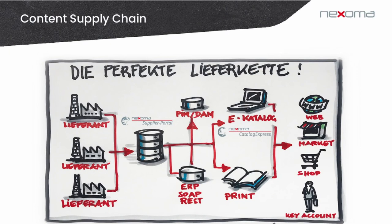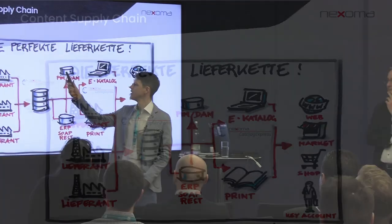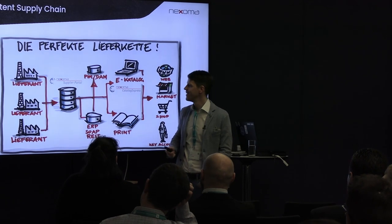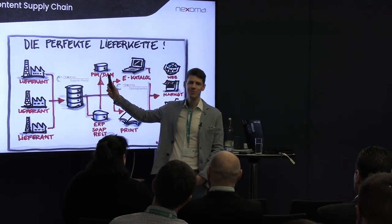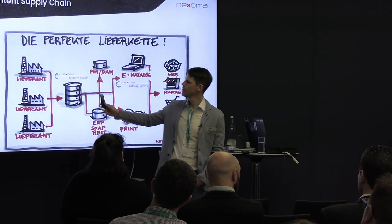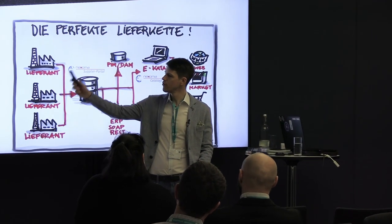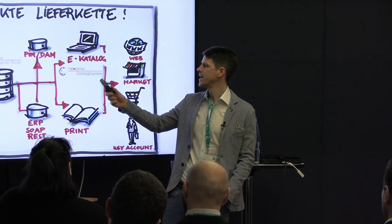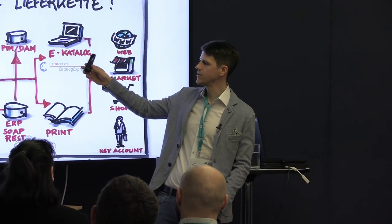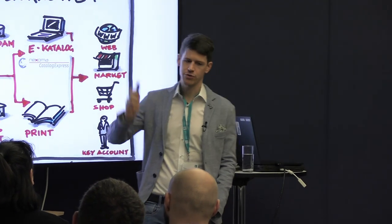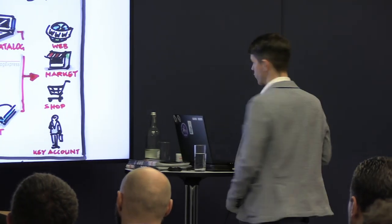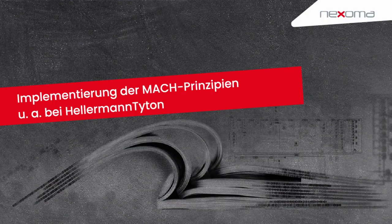At our end, we refer to this as the content supply chain. I think this is clear to everyone here. Everybody has to deal with PIM, whether it's the Excel spreadsheet or the real PIM database and an ERP system. And when you're a dealer, you are tasked with cooperating with suppliers to bring the data in. Both manufacturers and dealers are tasked with preparing data in such a fashion that we can actually distribute them to various marketplaces, channels, and web stores.